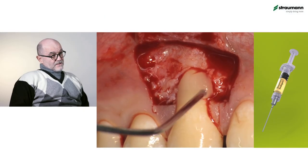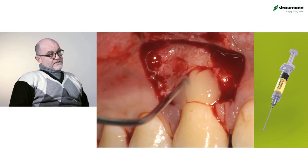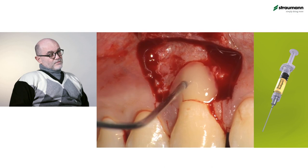The reason why we also used Emdogain was to improve the quality of the attachment between the newly formed connective tissue and the root surface. Emdogain, by depositing the amelogenins on the root, will promote the cells of the blood clot to be transformed into cementoblasts and fibroblasts, and this will improve the quality of new connective tissue attachment with respect to long junctional epithelium.